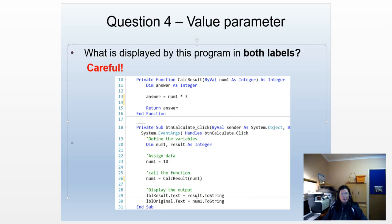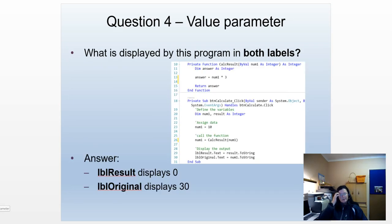Question 4: another program with a value parameter. Be very careful — what's displayed in this program? Pause the program and have a careful look. The answer is that label result will display 0, and label original will display 30. Why? Your answer lies on line 26. Trace through carefully: line 26 saves the result returned by the calculate result function in num1. So result remains 0 throughout the program. Line 30 displays 30.